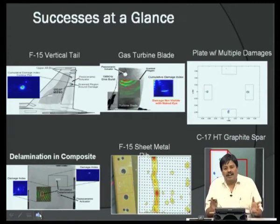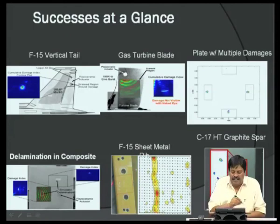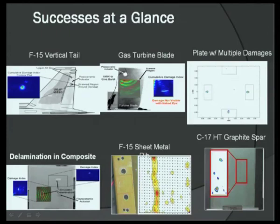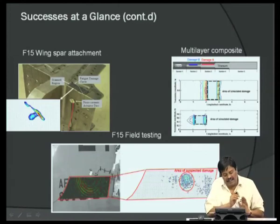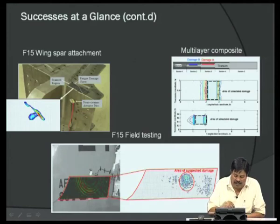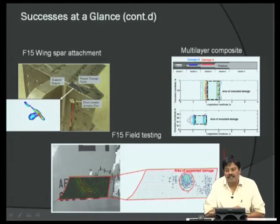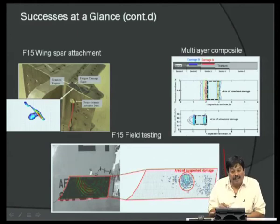Various laser vibrometer applications have been demonstrated: vertical tails, plates with multiple delaminations, sheet metal with hairline cracks, delamination in composites, manufacturing defects such as porosity, and a complex wing spar attachment. In a practical case, the technique was implemented on a real aircraft and the laser vibrometer successfully identified the location of damage.